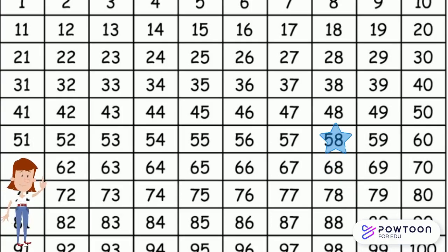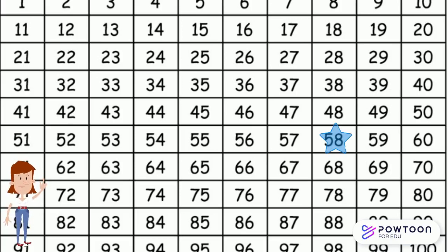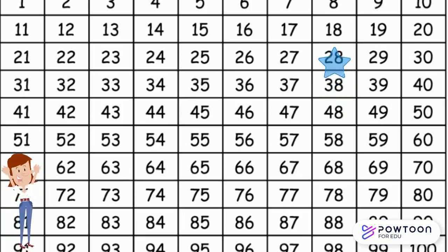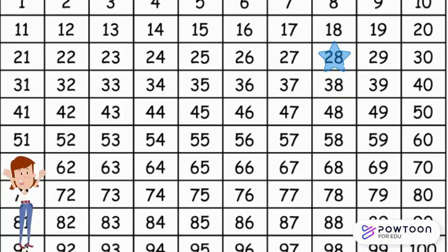Let's try one more. This time, we're going to start at 58 again, but we're going to subtract 30. Think about it — which way do you need to go? And how many hops to get there? Did you take three hops up the chart? If you landed on 28, you did it again. Awesome.